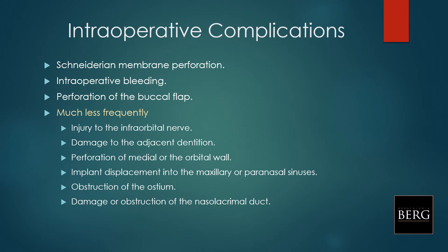Now we arrive to the ugly part: complications. This is a list of intraoperative complications. The most common by far is perforation of the Schneiderian membrane. Then we have bleeding and perforation of blood vessels. Minor incidents include injury to the infraorbital nerve, damage to adjacent dentition, perforation of the medial or orbital wall, implant displacement to the sinus, obstruction of the ostium, and damage or obstruction of the nasal lacrimal duct. Let's go through them one by one.